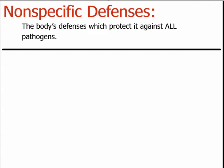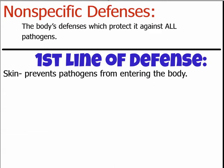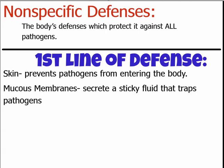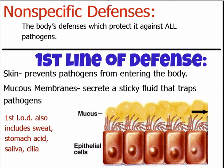Now we'll talk about the nonspecific defenses — defenses that protect us against all pathogens. The first line of defense includes things you've probably known since elementary school: skin prevents all pathogens from entering the body, mucous membranes secrete sticky fluid that traps pathogens, sweat, stomach acid destroys pathogens in food, saliva, and the cilia — the hairs in your nasal passages and lungs — sweep away debris. Those are all part of your first line of defense.